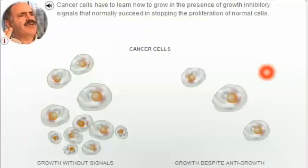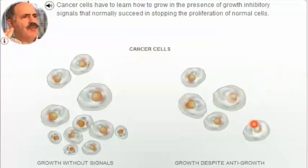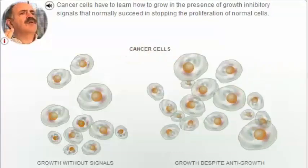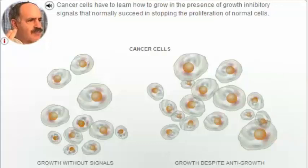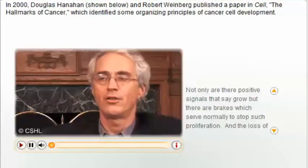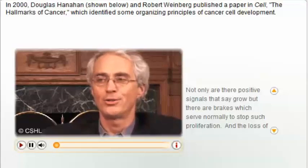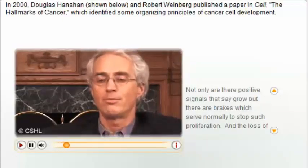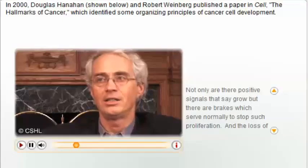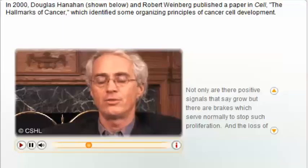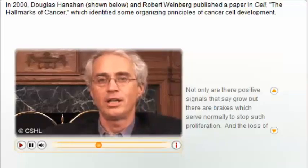Cancer cells have to learn how to grow in the presence of growth inhibitory signals that normally succeed in stopping the proliferation of normal cells. Not only are there positive signals that say grow, but there are brakes which normally serve to stop such proliferation. The loss of these growth control signals, these negative growth controls, is again a common denominator for many cancers.